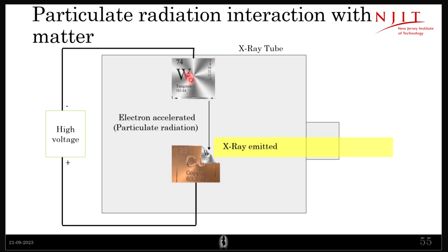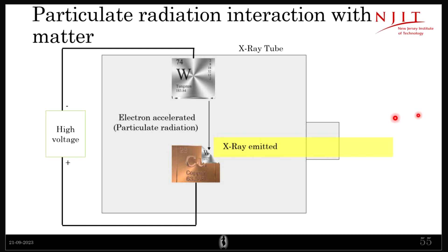Let's say you have a tungsten element here — this is the cathode. And there is the anode, which is made of copper, but it has a tungsten target. You supply very high voltage, and because of that high voltage, electrons flow from the cathode towards the anode — that is, from tungsten to the tungsten target. And something happens that leads to the production of x-rays.